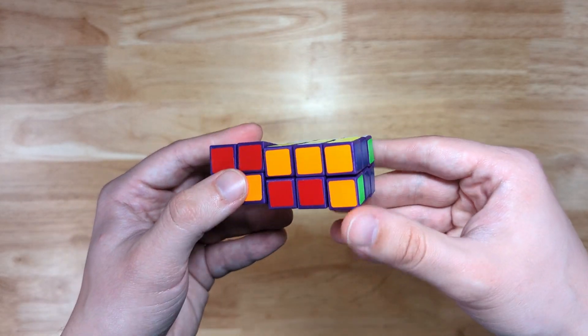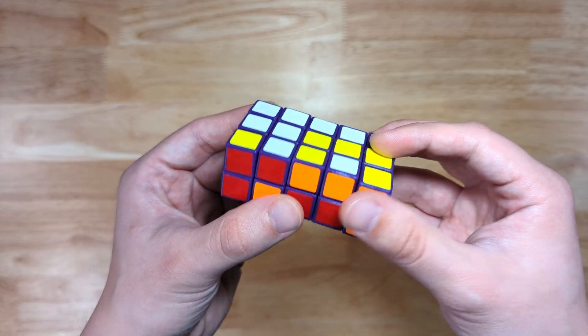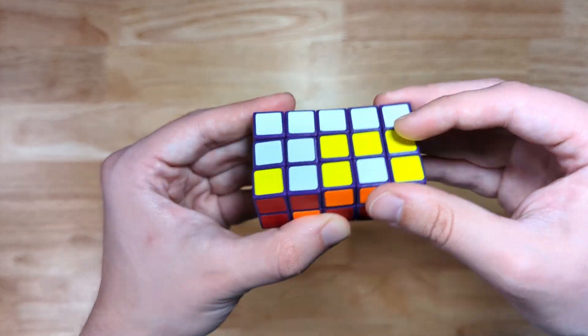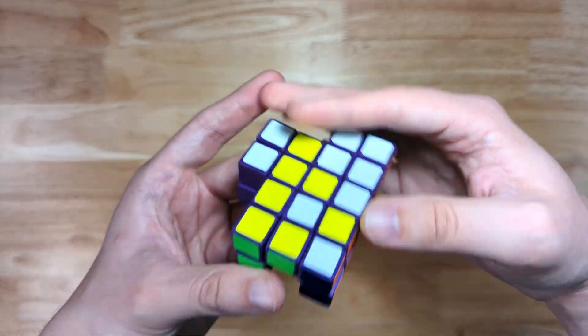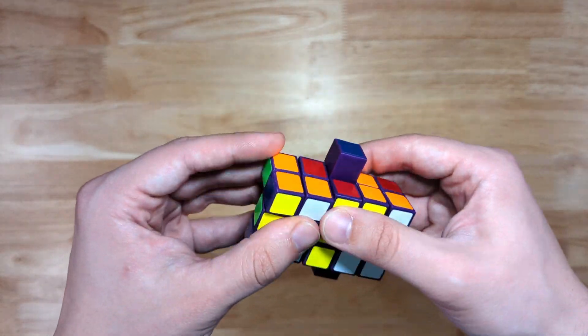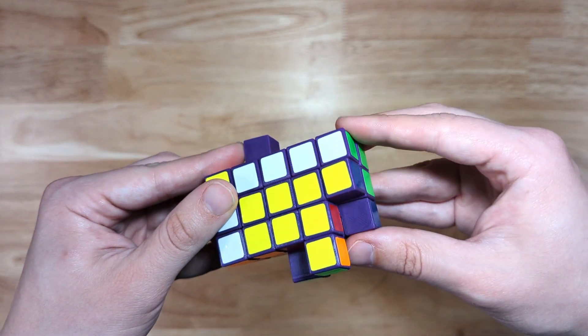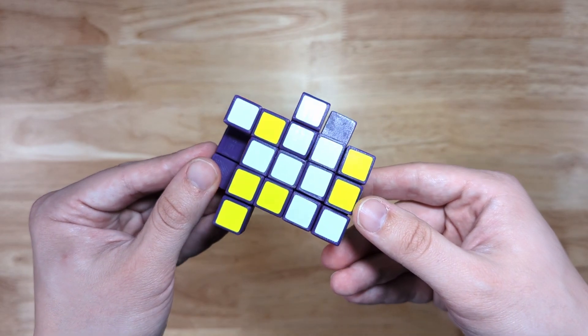Now that the outer layers are sufficiently scrambled, we can shapeshift this and scramble it exactly like a 3x3x2. Okay, I would consider the 2x3x5 sufficiently scrambled at this point.